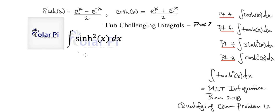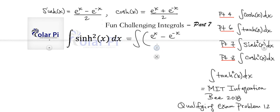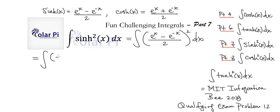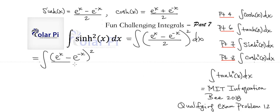Hey guys, part seven here. Here we're dealing with the integral of sinh squared, and here's a reminder of how we define sinh. So it's clear that the given integral can be rewritten as e to the x minus e to the negative x, divided by 2, all squared, and then of course dx.